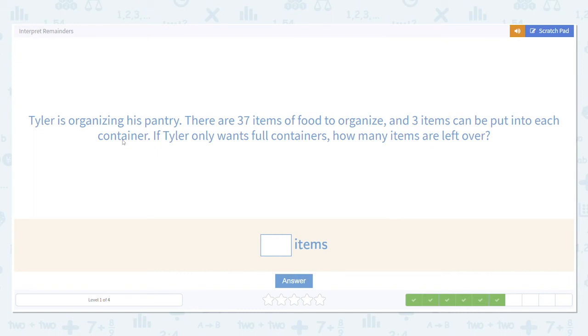Tyler's organizing his pantry. There are 37 items of food to organize, and three items can be put into each container. If he only wants full containers, how many items are left over?